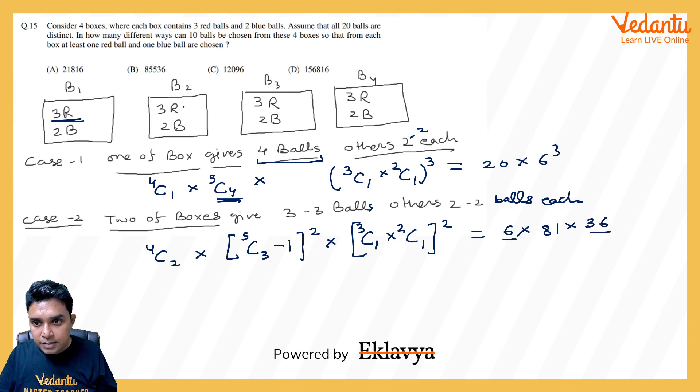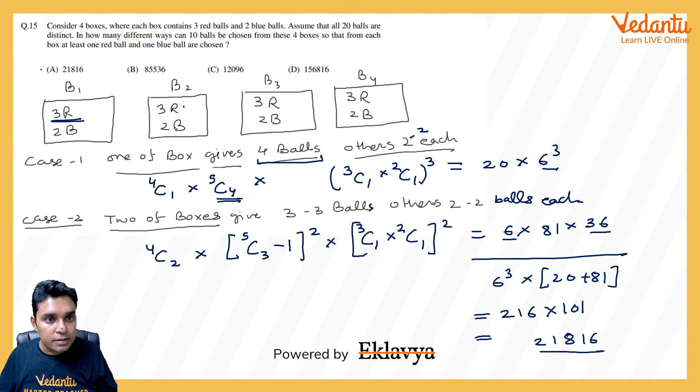So you can check the 6 into 36, 6 cube. We can take common if we add them. So total would be 6 cube into 20 plus 81. So this becomes 216 into 101. So this calculation is also becoming easier. 216 into 1 is 216. So 16 I will write and then once again 216 add 2 to it, you get 21816. So answer for this is A.